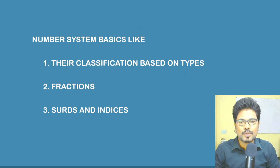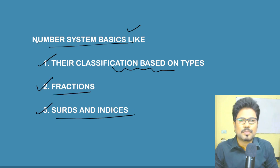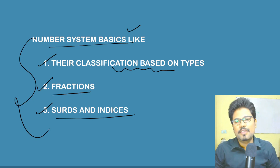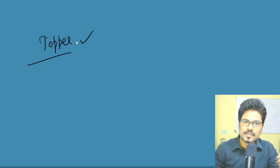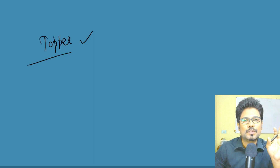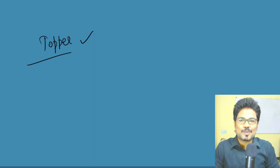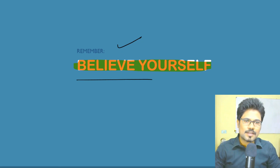Division is very important, and what you need are basic divisibility rules and number system basics — like classification based on types: integer, real number, whole number, natural number — all covered in three to four minutes. Fractions in ten to fifteen minutes. Indices in half an hour. Believe me, by this you will become a topper — not just get selected. Believe yourself, and things start getting changed. I will meet you soon in the next video lesson.